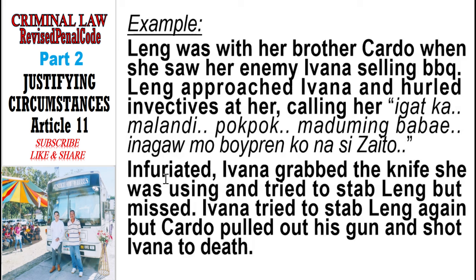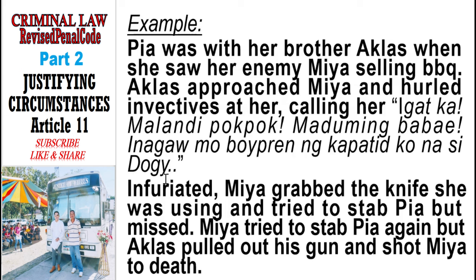Another example: Pia was with her brother Aklas when she saw her enemy Mia selling barbecue. Aklas approached Mia and hurled invectives at her. Infuriated, Mia grabbed the knife and tried to stab Pia but missed. Mia tried again but Aklas pulled out his gun and shot Mia to death. In this example, the person making the defense took part in the provocation — Aklas provoked the victim. Since the third requirement is not present, Aklas will be liable, making it a case of incomplete defense of relatives.